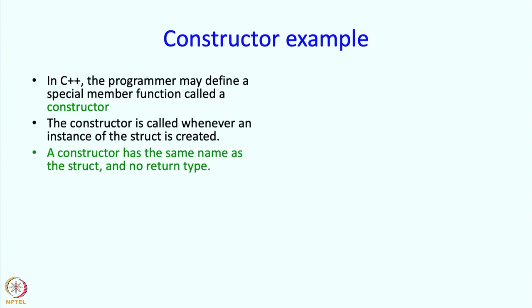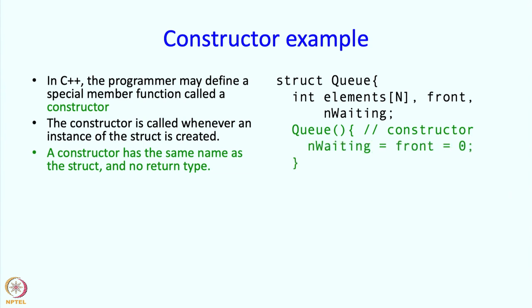Inside the body of the structure definition, a constructor has the same name as the struct and it does not have a return type. For a struct q, these were the members, and here is the constructor. So q, there could be parameters but this particular constructor does not have a parameter, and then we are going to give the code that is to be executed. So this is what the constructor is.